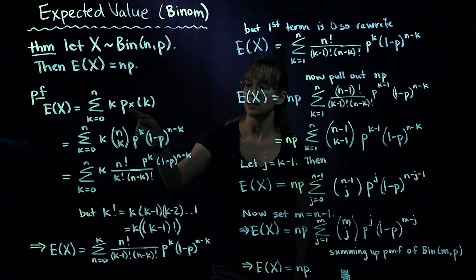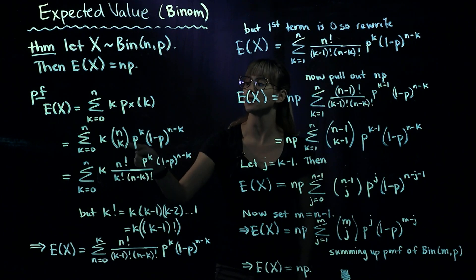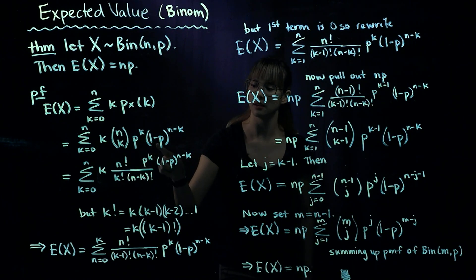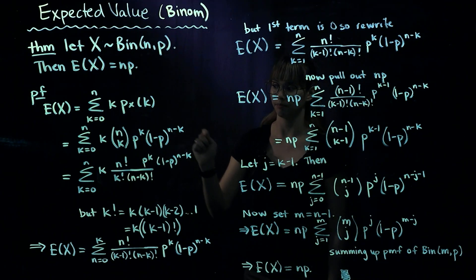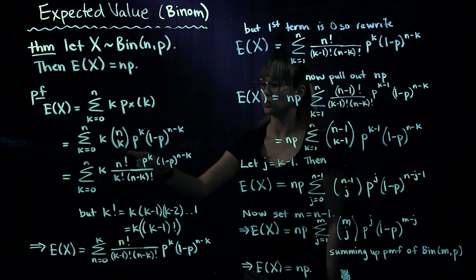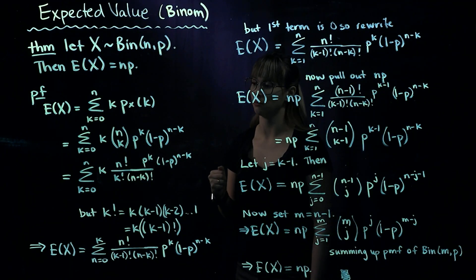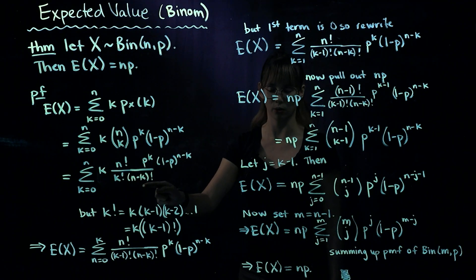Let's write in what the PMF for a binomial looks like. It's n choose k times p to the k times the probability of failure to the number of failures, n minus k. Now let's rewrite n choose k in terms of factorials: n choose k is n factorial divided by k factorial times n minus k factorial.